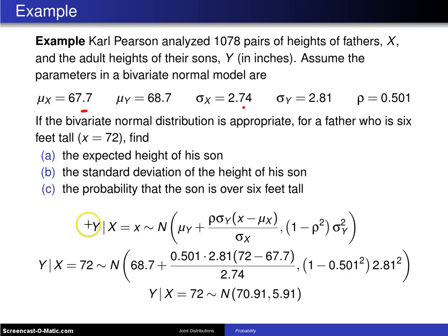Okay, so let's begin with the conditional distribution. The conditional distribution of Y given X equals x is normally distributed, this is from two pages ago, with a mean of this and a variance of that. So if we plug in our specific values, μ_Y is 68.7 inches, ρσ_Y is put in, X here is assumed to be 72, so the 72 shows up right here, divided by σ_X, and here is 1 minus ρ squared, multiplied by σ_Y squared.